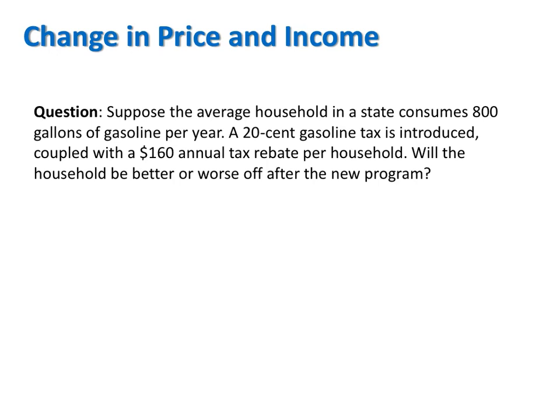Consider the following example. Suppose the average household in a state consumes 800 gallons of gasoline per year. A 20-cent gas tax is introduced, coupled with a $160 annual tax rebate per household. Will the household be better or worse off after the new program? In this example, we have a 20-cent gas tax, which effectively increases the price of gas. And at the same time, we have a $160 rebate, which increases the household's income.